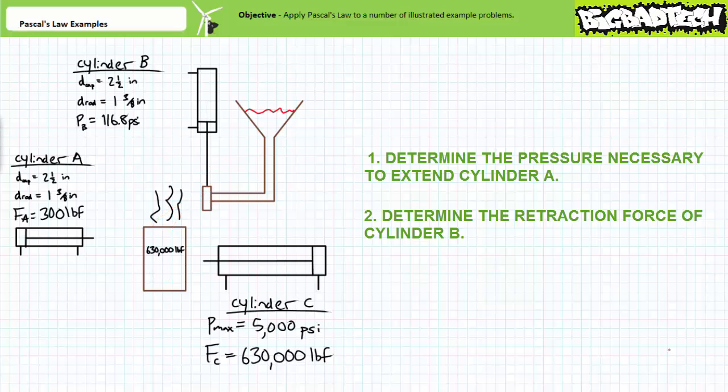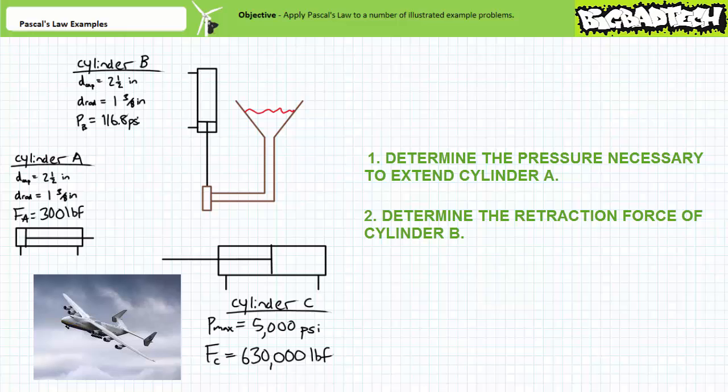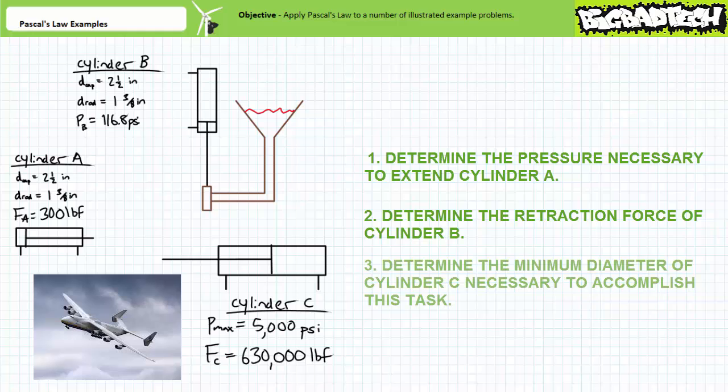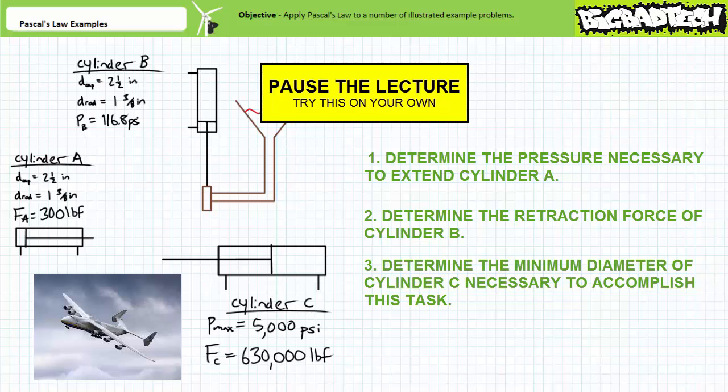The molten aluminum in the mold is allowed to cool and then cylinder C pushes the combined mold and cooled aluminum onto the floor. The ceramic mold shatters into a million sharp pieces and out pops a fully formed Antonov AN-225 Maria cargo aircraft. Let's say the combined weight of the mold in the aircraft inside weighs 630,000 pounds. Determine the minimum diameter of cylinder C necessary to accomplish this final task if maximum pressure is again limited to 5,000 psi. By all means pause the lecture and take your best shot.